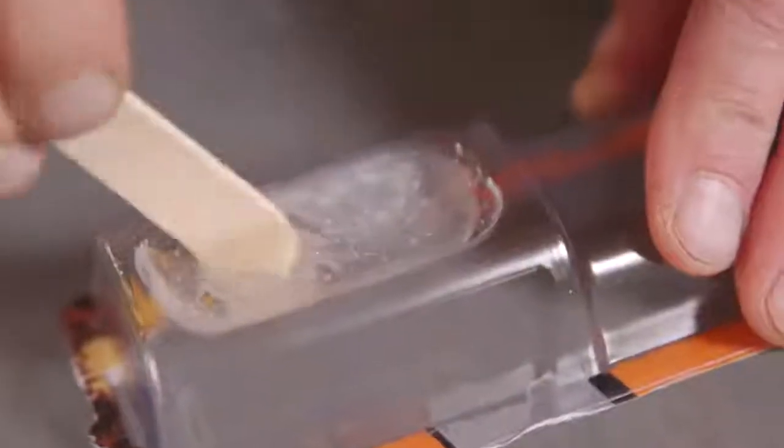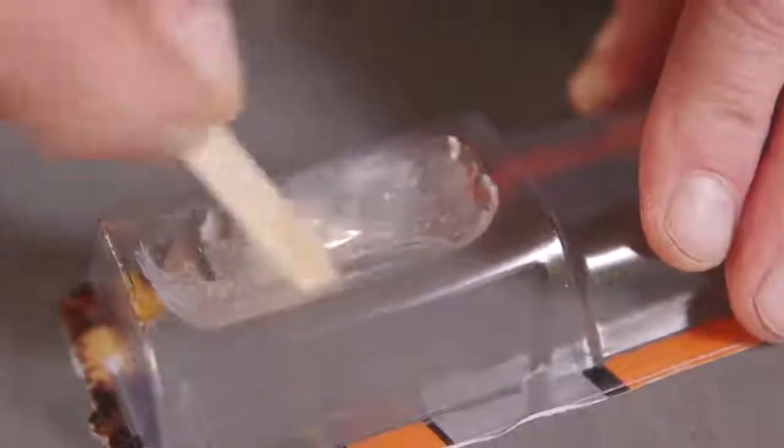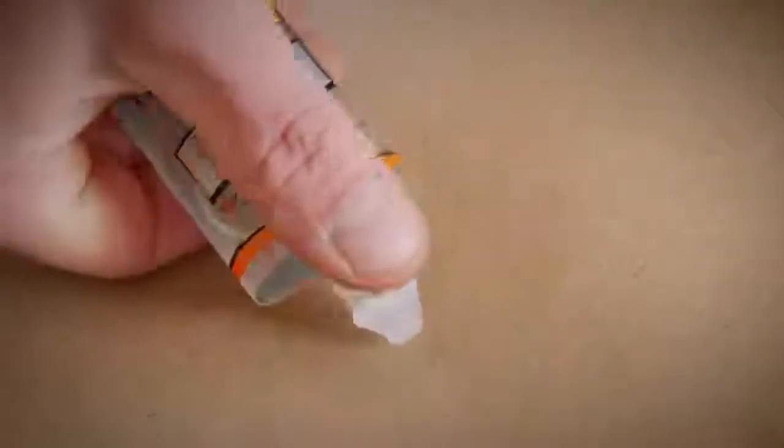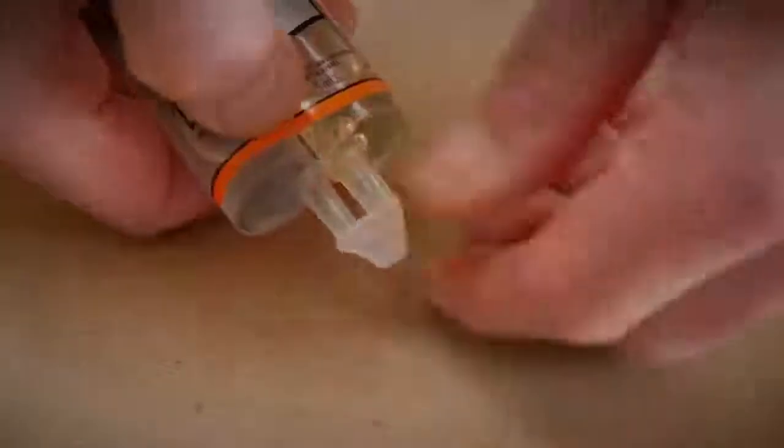Next, you will need a tray to mix the two parts. Gorilla Epoxy comes with a built-in tray, but you can also use other disposable household items, such as a paper plate or the bottom of a soda can. Once you have a tray ready, dispense the resin and hardener in equal parts.